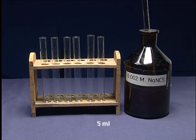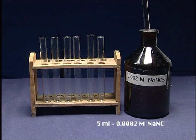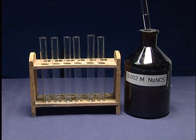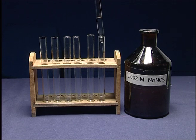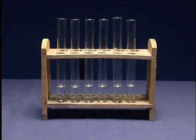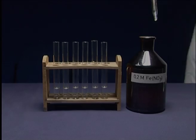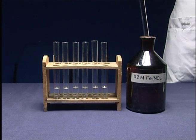Put 5 ml of 0.2M Sodium Thiocyanate into each test tube. Add 5 ml of 0.2M Ferric Nitrate into the first tube.